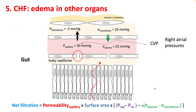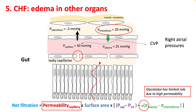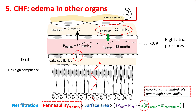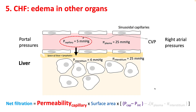The gut also has very leaky capillaries with a low reflection coefficient and high interstitial oncotic pressure, making them well-suited to reabsorption of proteins and carbohydrate molecules. The gut has high compliance, making it more prone to edema. However, these are rich in lymphatic drainage because of their function, so edema formation happens much later.